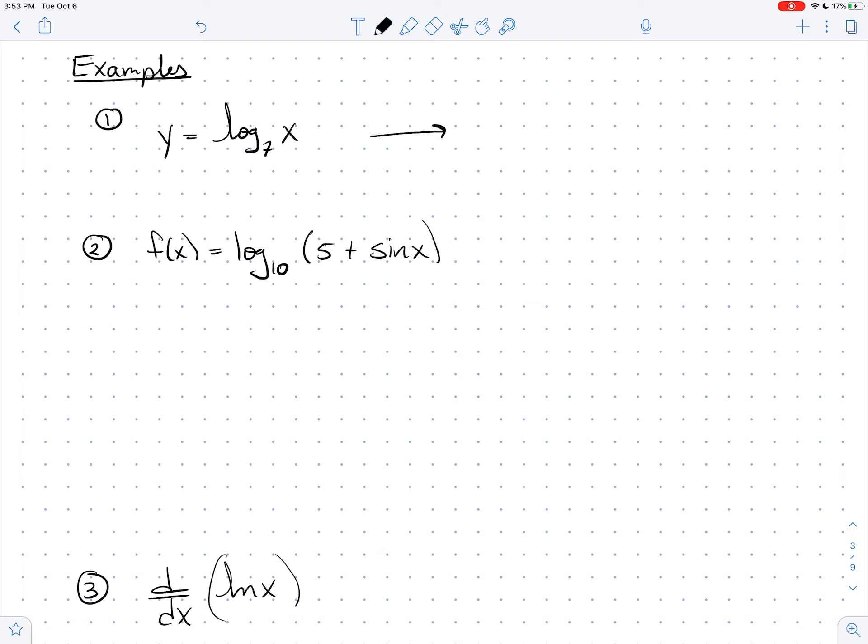And hopefully you can come up with dy/dx equals 1 over x times natural log of 7. That's it. You're done. Good job.